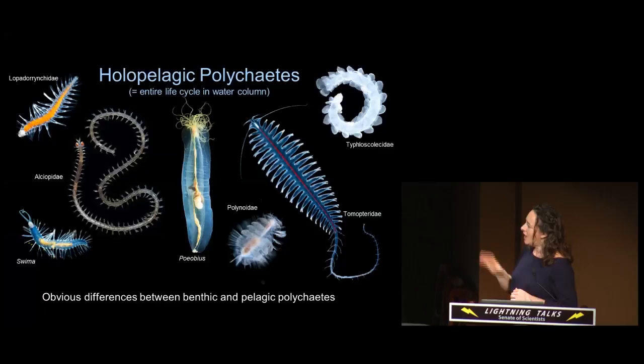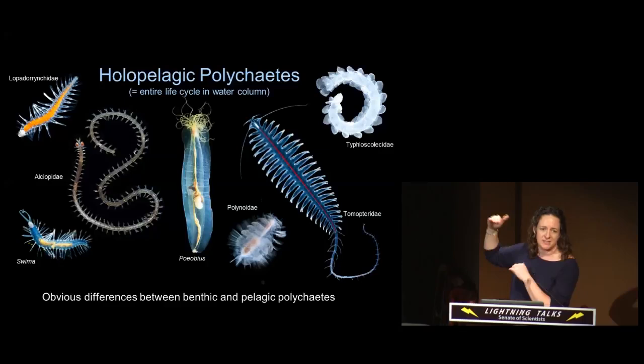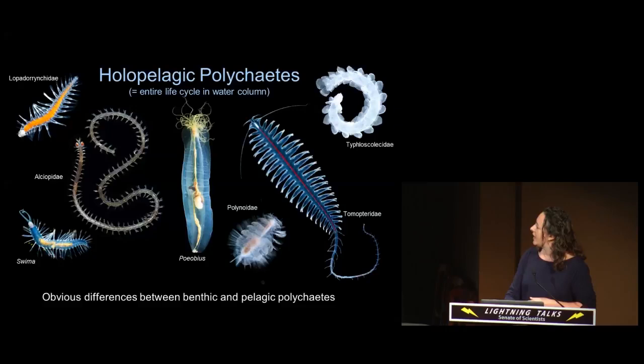I'm interested in the ones that have an entirely pelagic existence. These animals are highly specialized for living up in the water column. The water column is the largest habitat on earth — all the water below the surface and above the sea floor. The living conditions and the animals we see there are extremely different from those that we're used to.